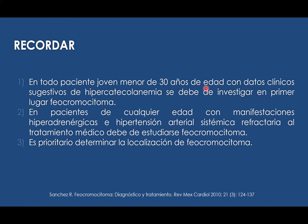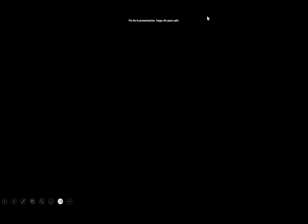En todo paciente joven menor de 30 años de edad con datos clínicos sugestivos de hipercatecolaminemia se debe investigar en primer lugar feocromocitoma. Los datos clínicos de hipercatecolaminemia incluyen la famosa piloerección — coloquialmente llamada piel de gallina — con elevación de los vellos corporales, un estado de alerta, sudoraciones y taquicardias. Estos síntomas pueden orientarnos a una liberación de catecolaminas endógenas y hacernos sospechar de feocromocitoma sobre todo si es un paciente joven menor de 30 años. Si el paciente además no responde al tratamiento, también hay que sospechar de feocromocitoma. Es prioritario determinar la localización del feocromocitoma. Con eso damos finalizada la presentación; cualquier duda o consulta comunicarla al correo institucional. Gracias.